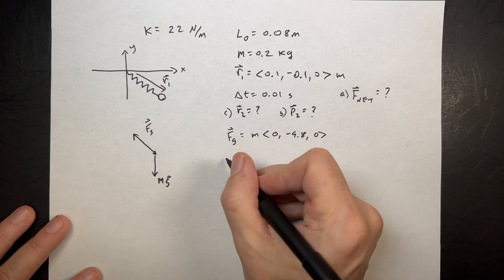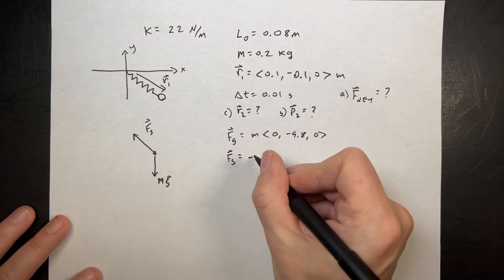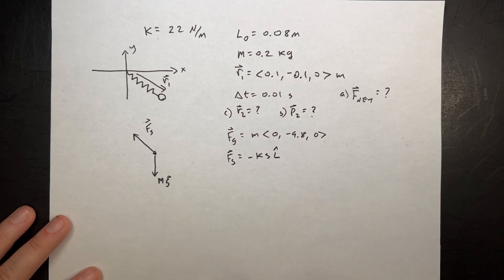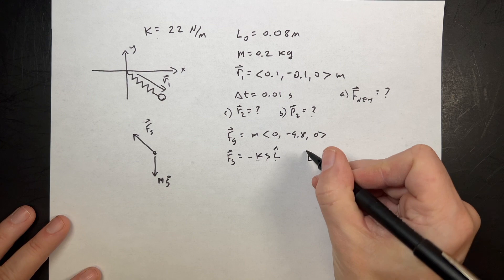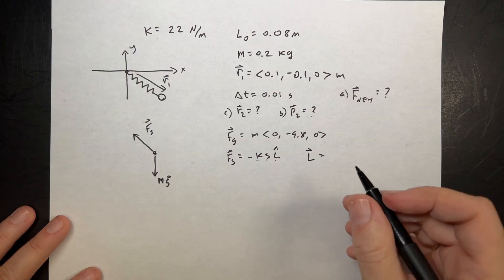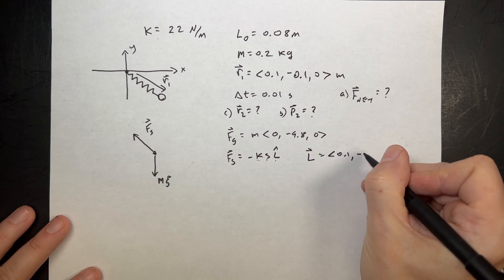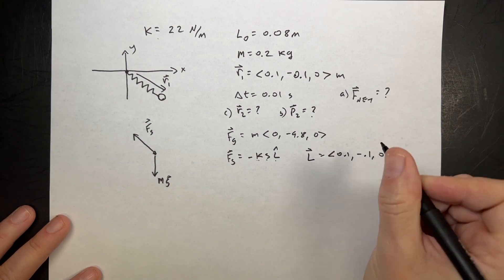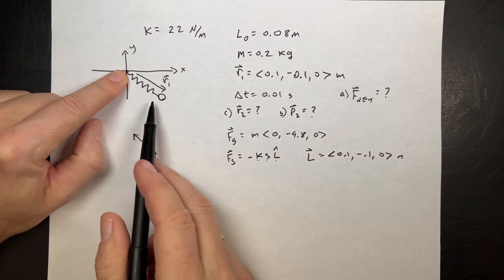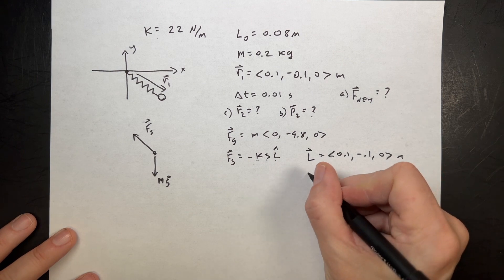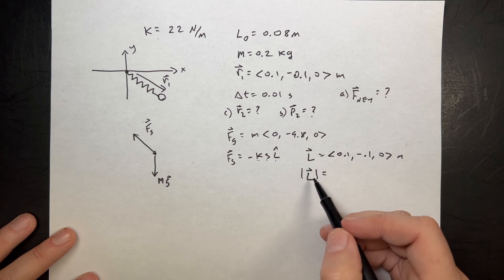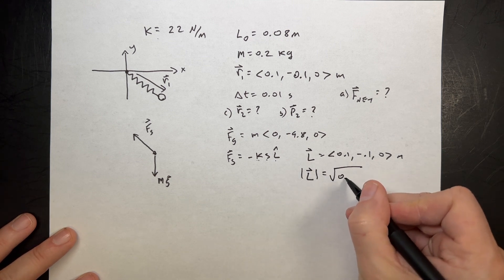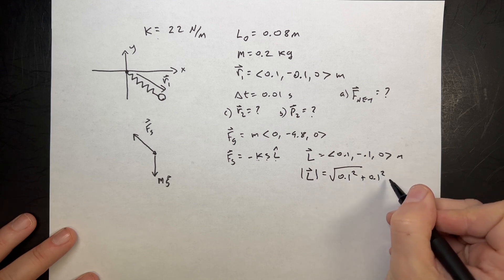And then I need to find the spring force. Fs is going to be equal to negative ks L hat. So this is the spring constant. That's the amount it's stretched, and that's a unit vector in the direction of the spring. So let's first find the vector L. Since I put the beginning of the spring right there, L is just the vector 0.1, negative 0.1, zero. It's the same. It's this vector. It is the position of the mass. If I want to find L hat, I need to find L magnitude.